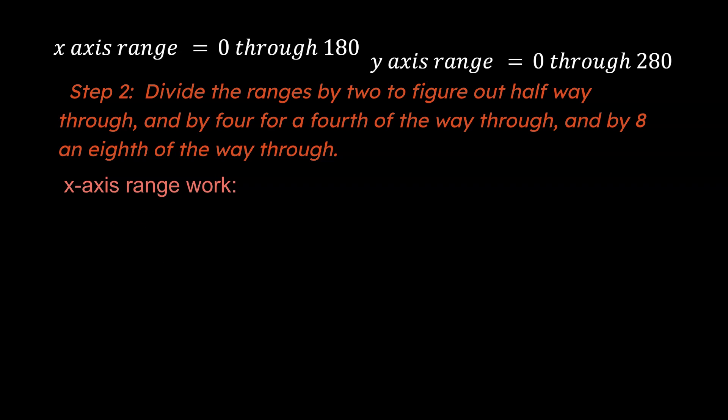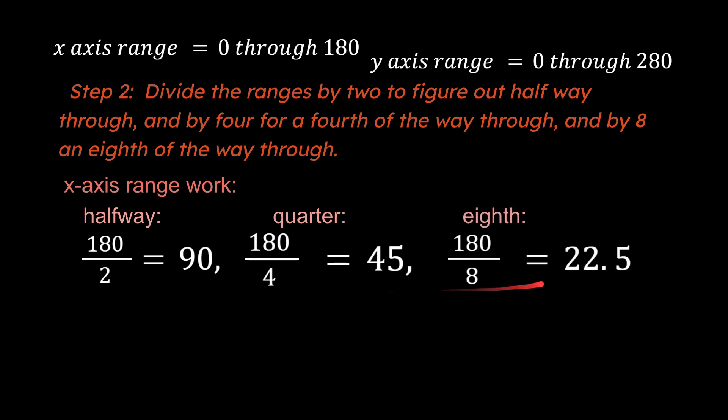So for our X axis range we know that the total range is 180 units of whatever it is we're dealing with. We divide that by two we'll get 90. And if we do a quarter of our total distance across in the X axis that would be 45 units. And if we take an eighth of that that would be 22.5.